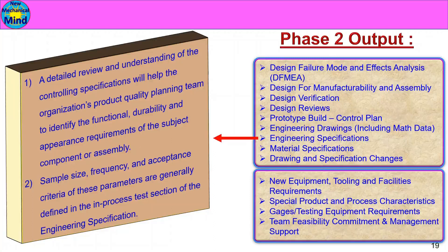Sample size, frequency, and acceptance criteria of these parameters are generally defined in the in-process test section of the engineering specification. The drawing is prepared with tolerance and dimensions finalized. The customer has the acceptance criteria and the part has functional, durability, and appearance requirements in the in-process test based on the engineering specification.